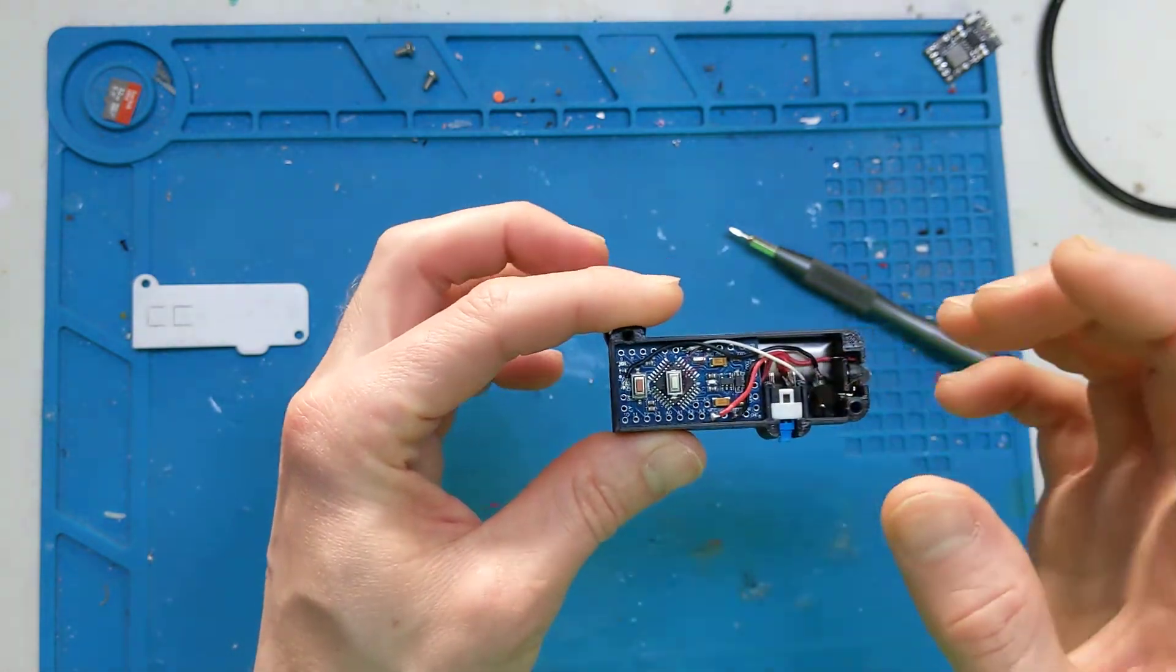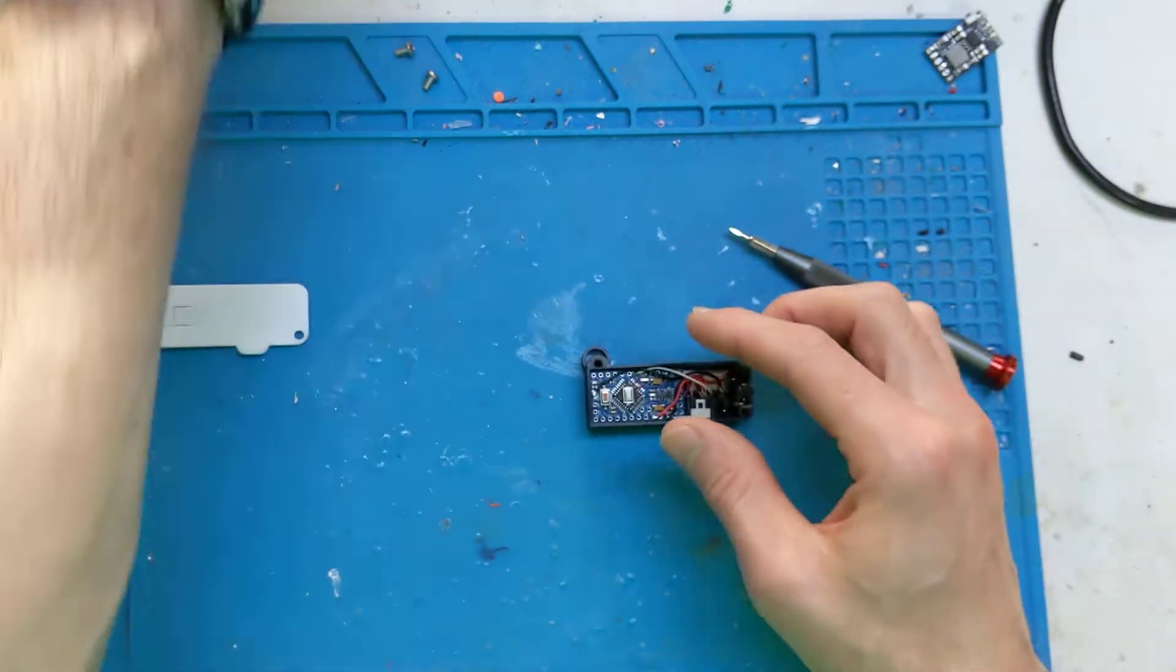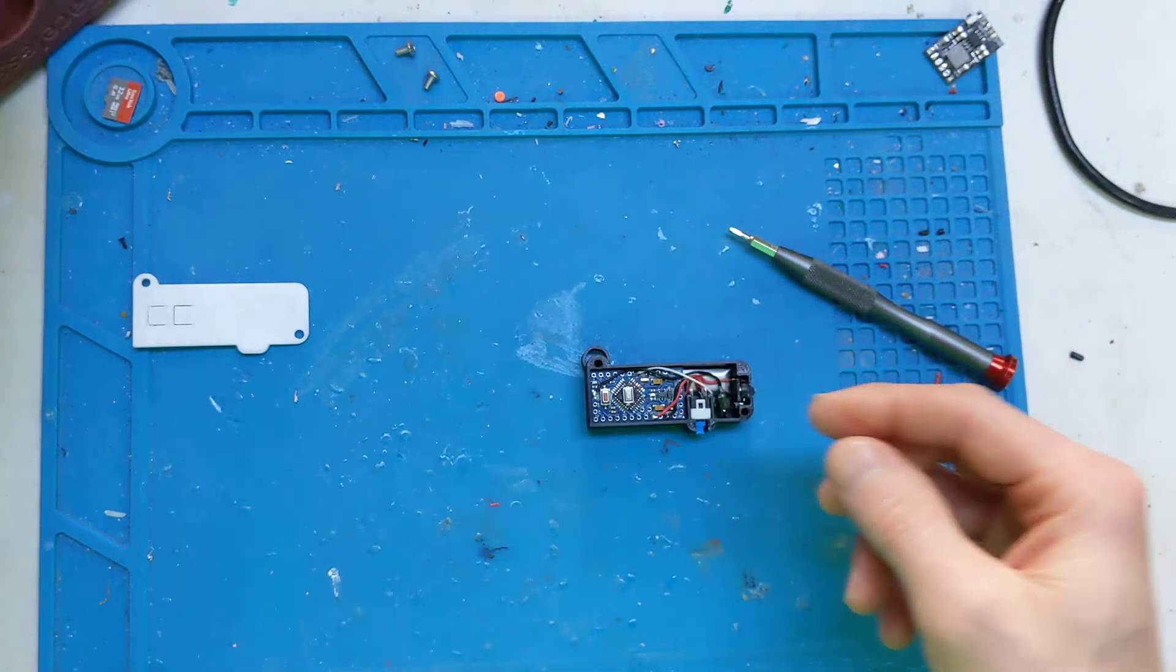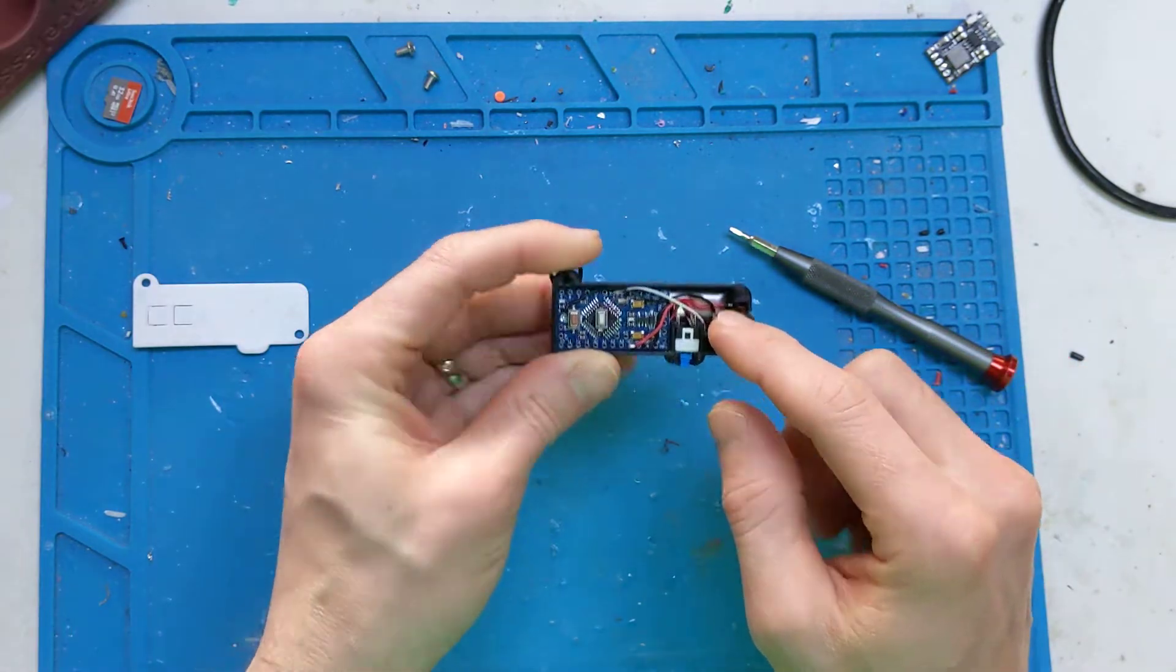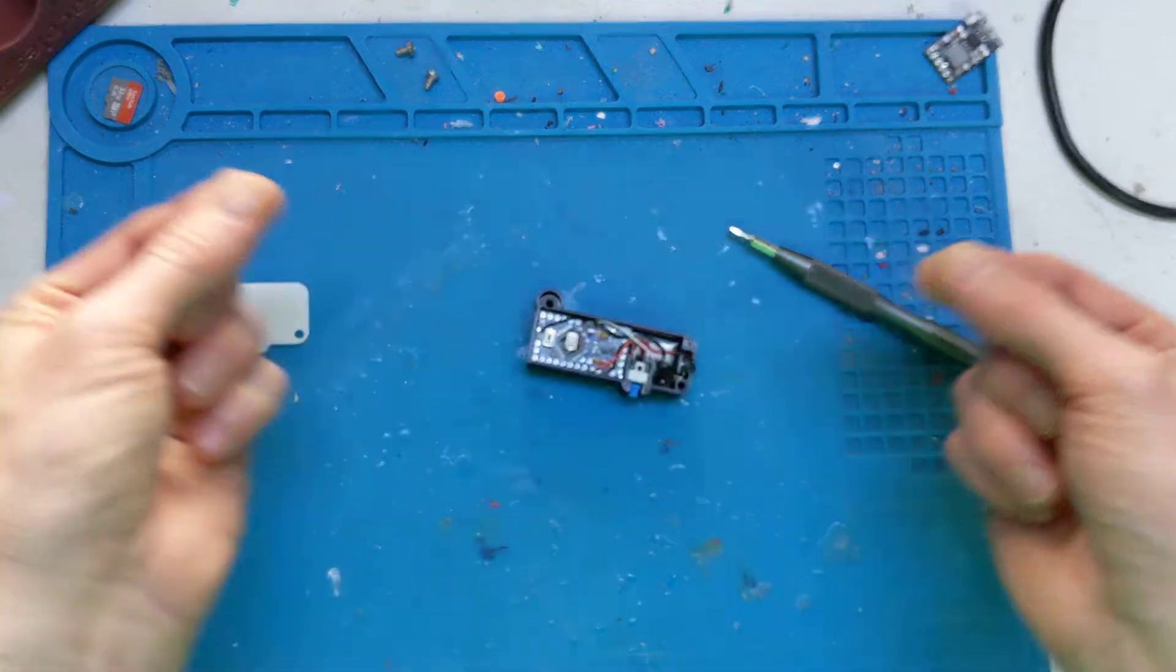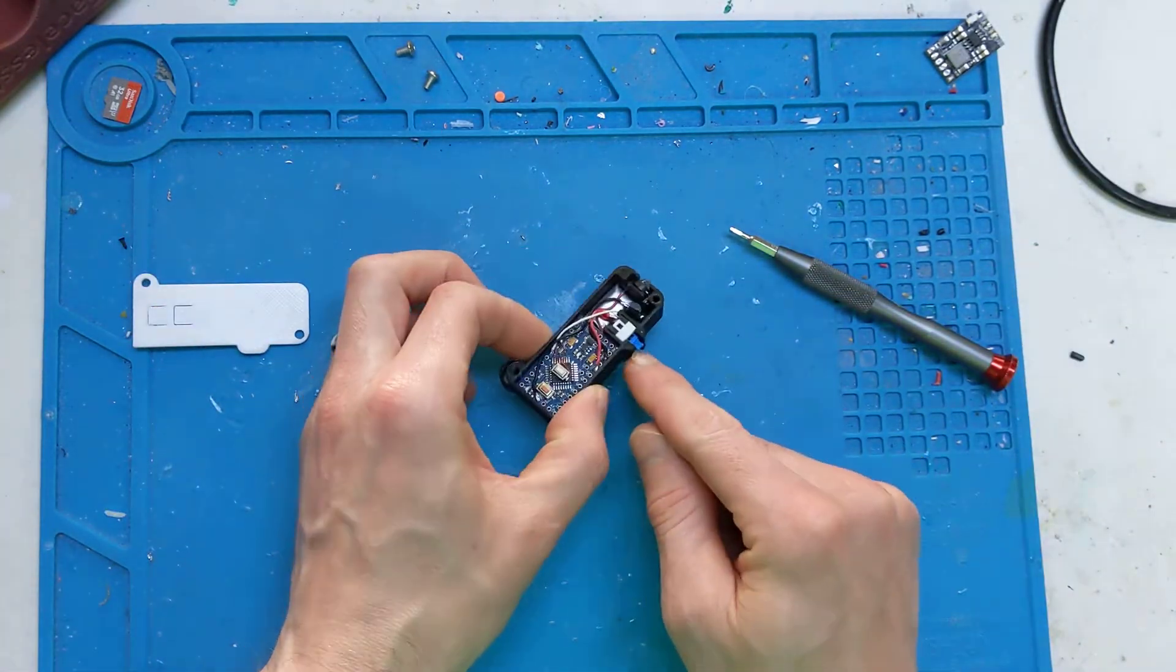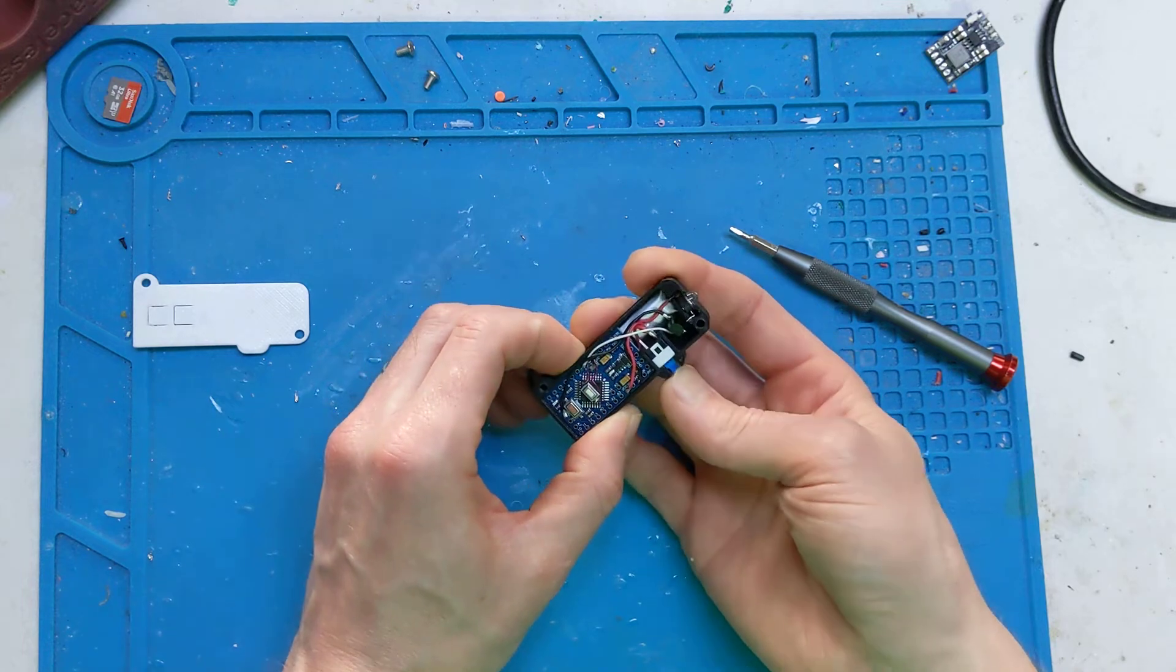And then underneath that is basically a power bank board, similar to something you'd find in one of these cheap power banks. Just stripped that out. There's a little battery here that's out of a pair of Bluetooth headphones. You know, the ones that have the wire and a little control box. Well, I took the battery out of that.